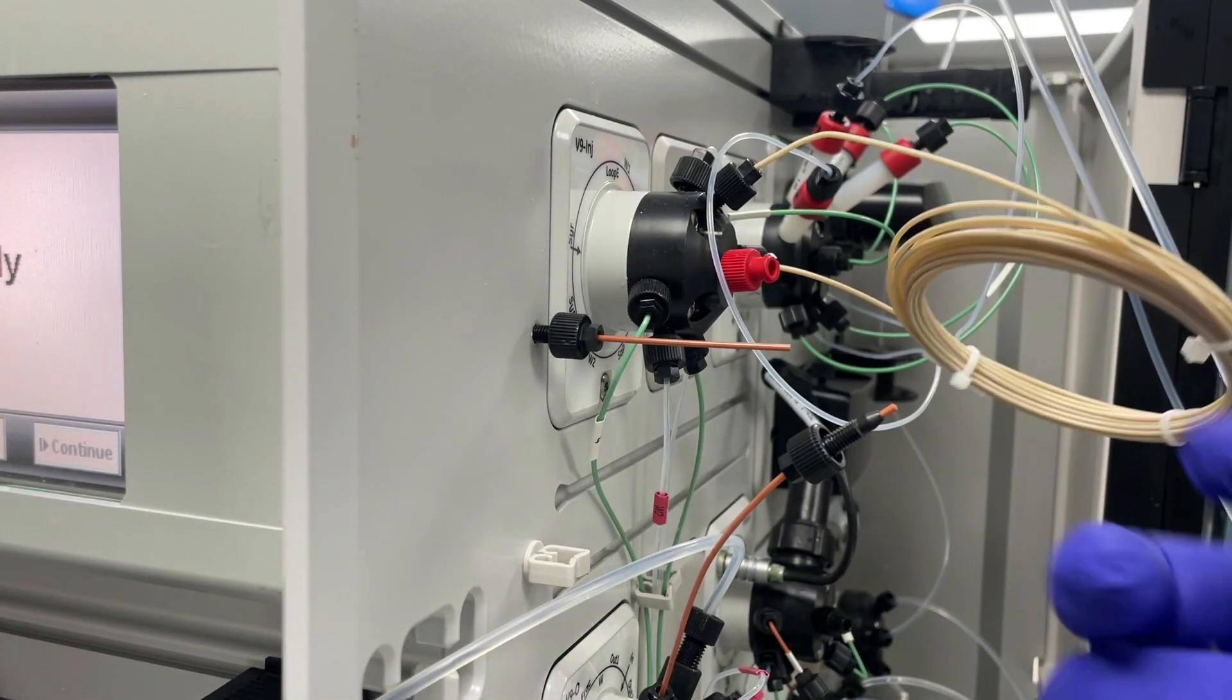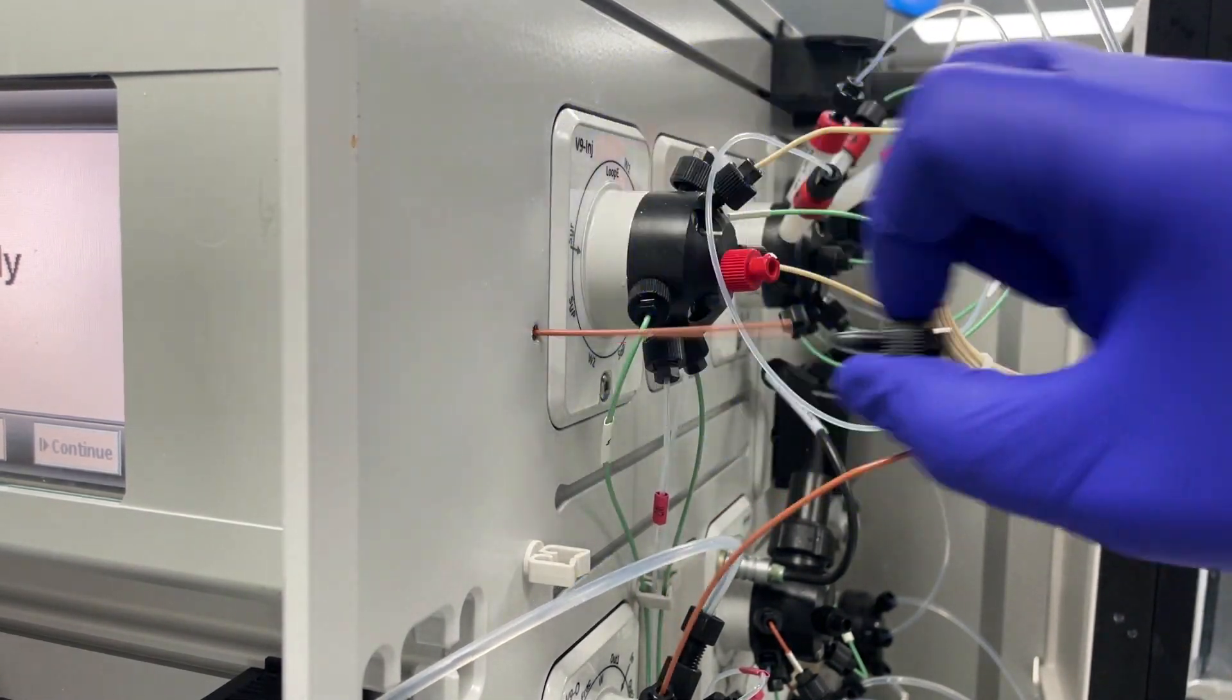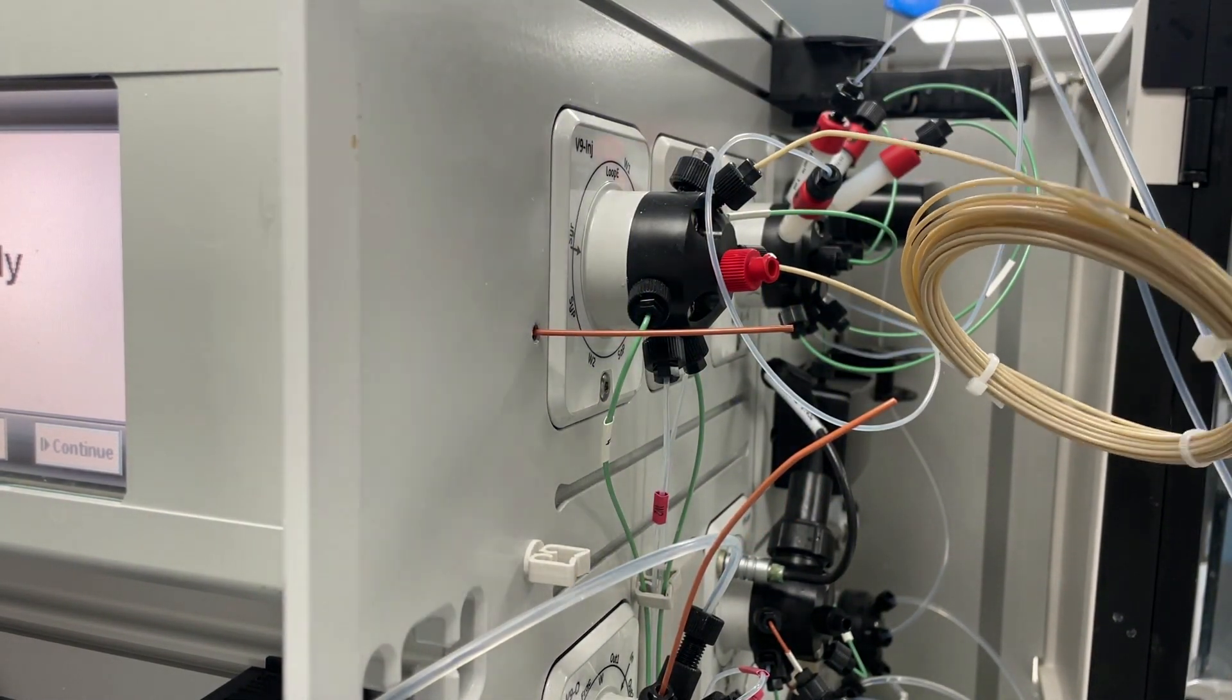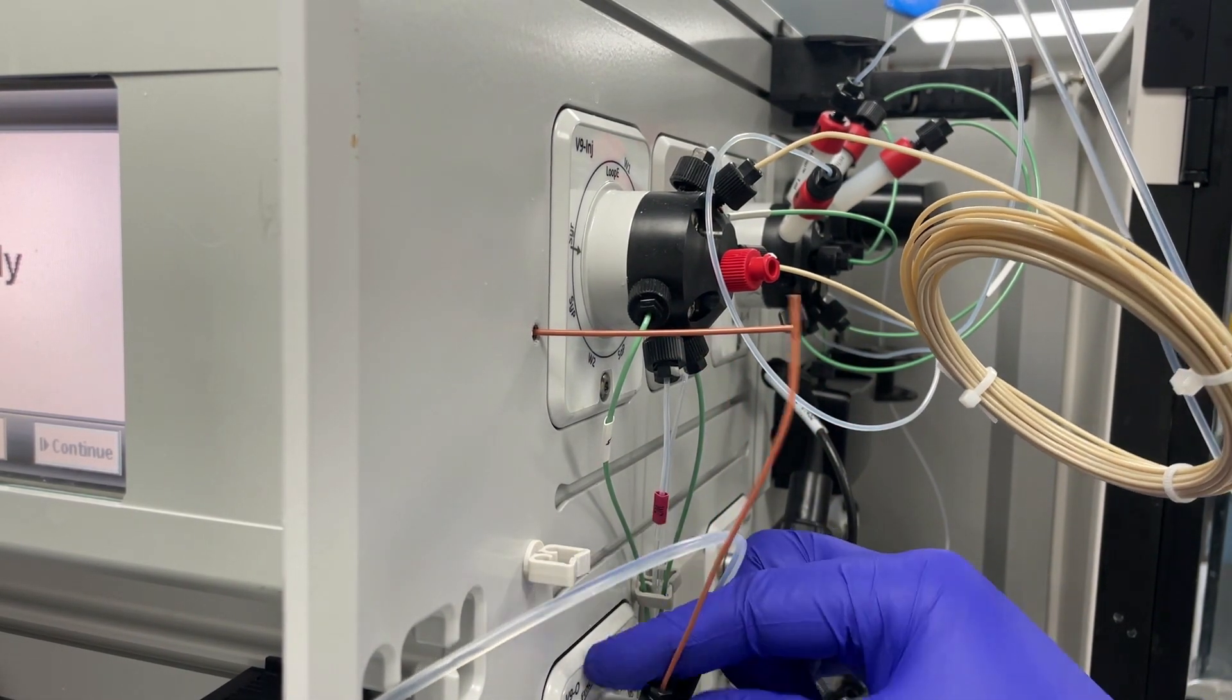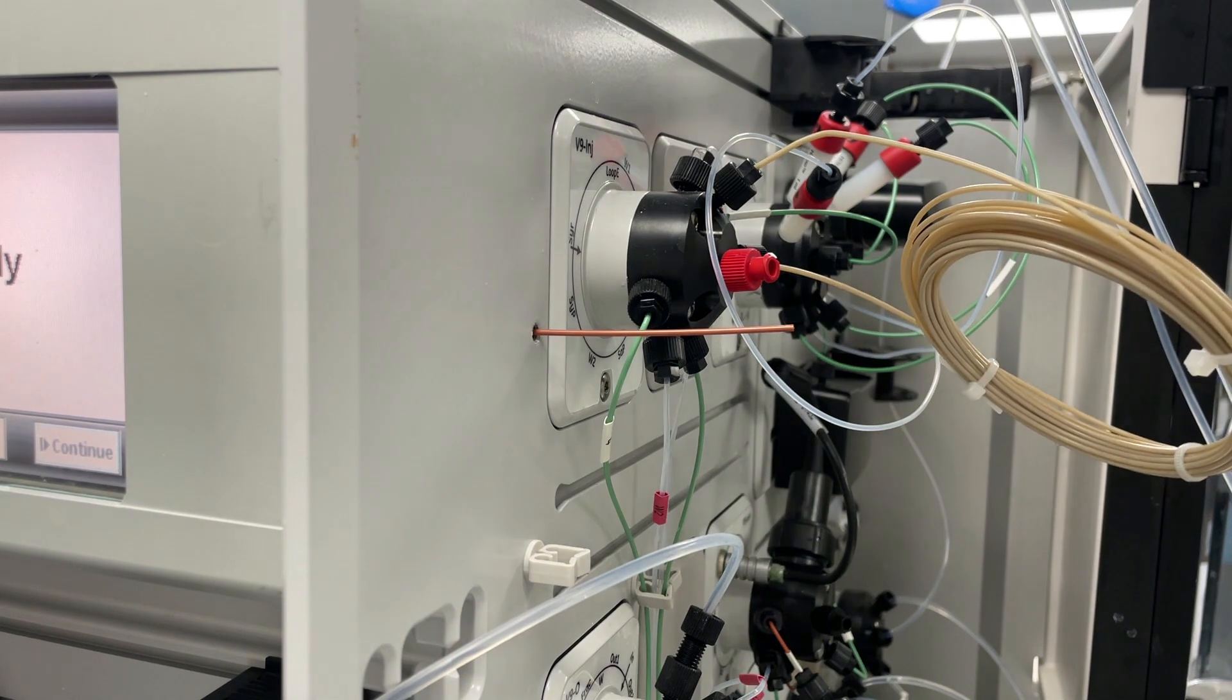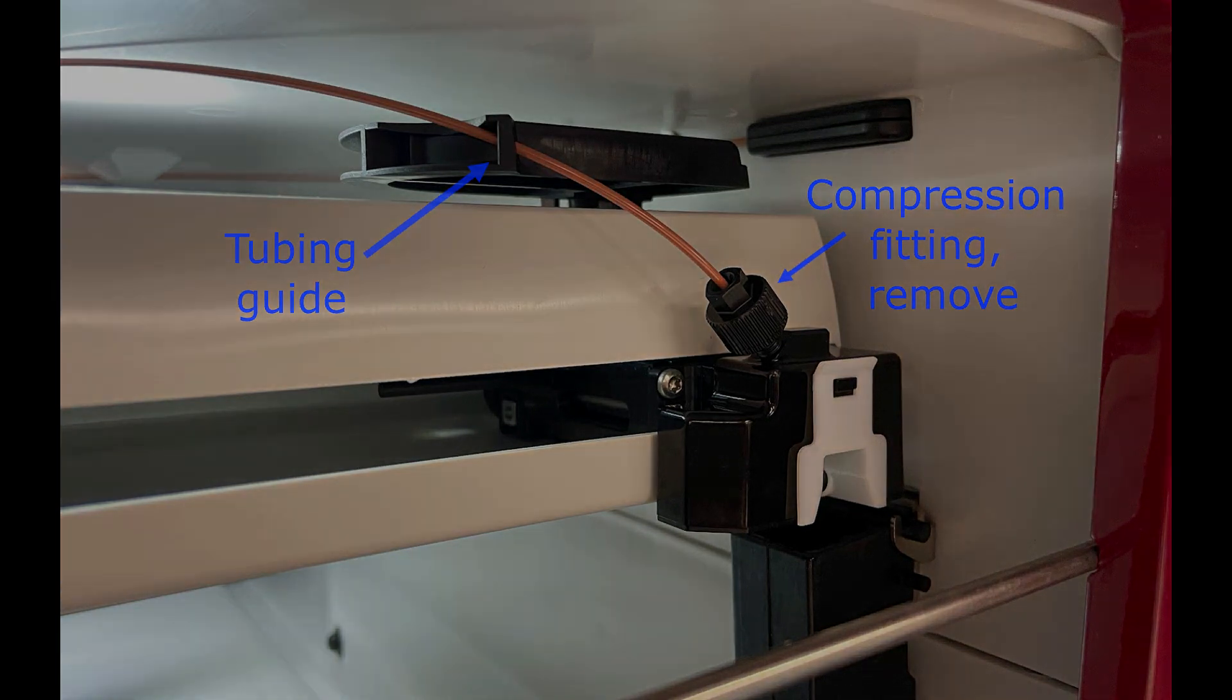To replace the tubing, the first thing you'll need to do is remove the existing compression fittings. There's one on the outlet valve, one that goes into the body of the Avon, and one on top of the drop sensor. Pull the tubing clear of the drop sensor guide too. This will keep the tubing from getting knotted up inside the Fraction Collector.